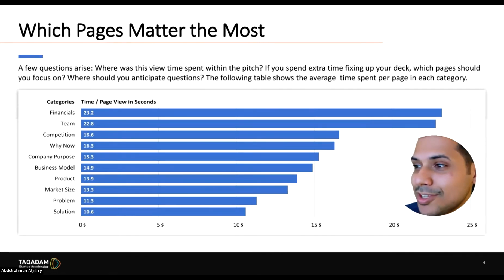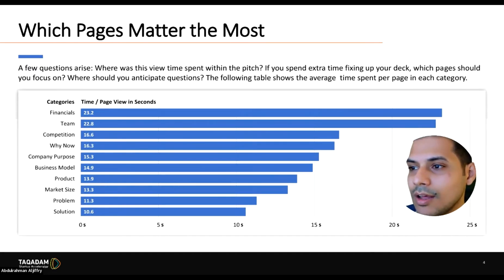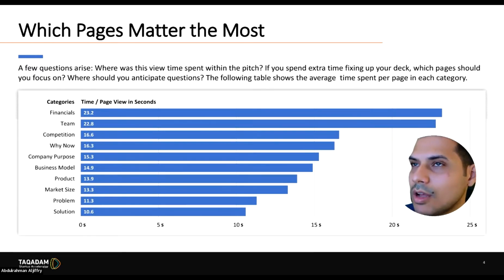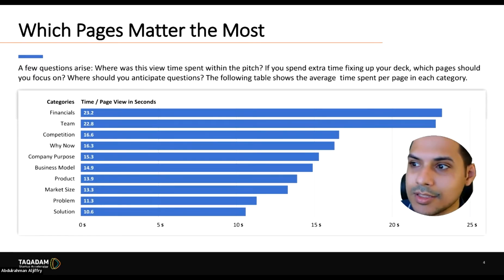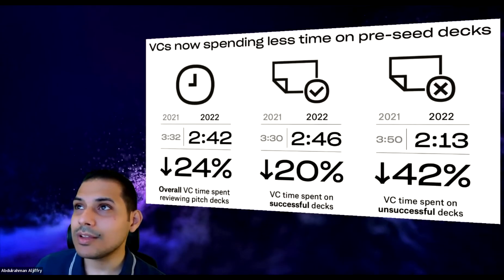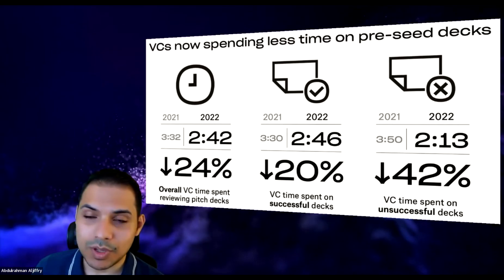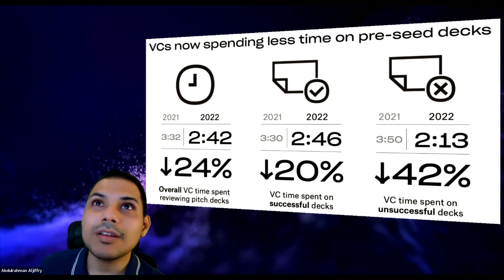The average investor used to spend about three and a half minutes on your deck, but it's getting worse. As of 2022, people are down to two minutes and 42 seconds to review each deck.